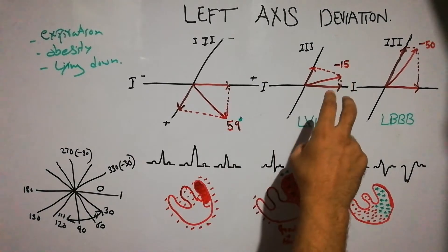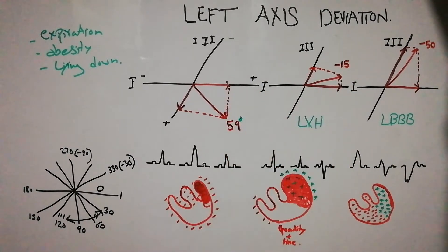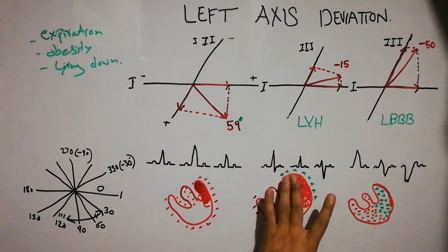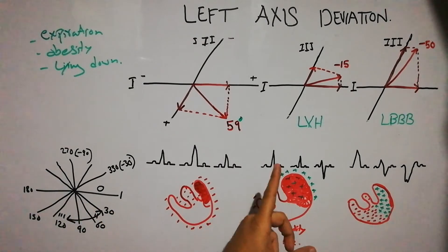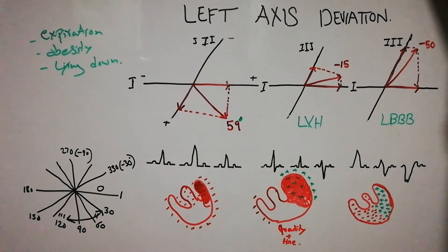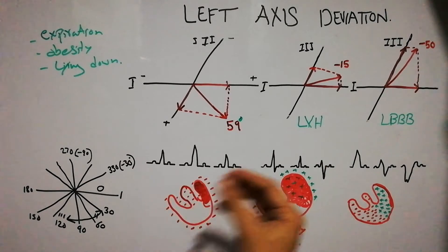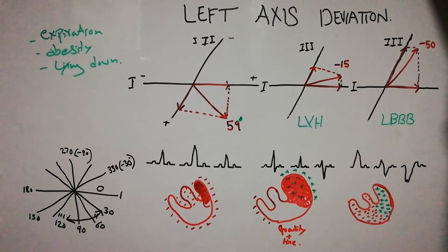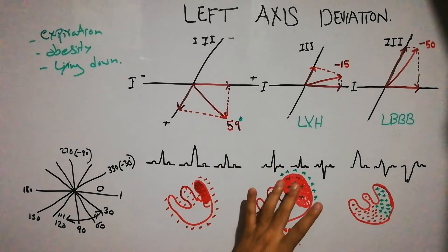In left ventricular hypertrophy, the left side of the heart has hypertrophied or increased in size. The most common cause is high blood pressure, because the heart has to pump against high resistance, leading to hypertrophy of the left ventricle. Other conditions include aortic stenosis, which also puts significant pressure on the left side and increases the muscle mass of the left ventricle.